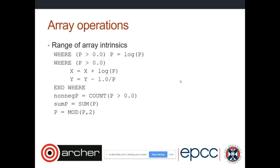Array operations can also be conditional using the `where` construct — for example, setting every element of an array where it's greater than zero to the log of that element. This lets you avoid applying operations like square root to negative numbers. Other useful array functions include `count` to count elements meeting a condition, `sum` to sum the array, and `modulus` for array modulus calculations.